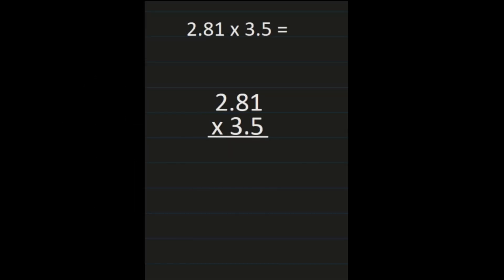For our first example, we have 2 and 81 hundredths times 3 and 5 tenths. As you can see, I did not line up my decimal when I set up the problem. You don't need to line up decimals when you're multiplying — that's only for adding and subtracting.